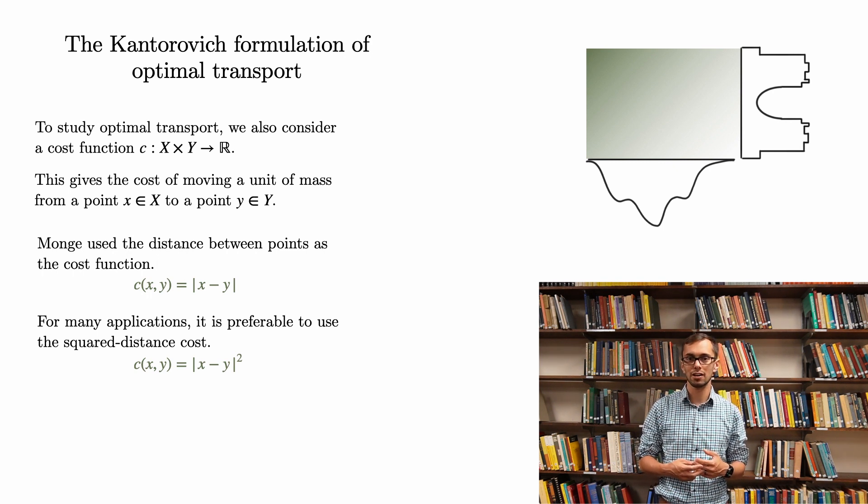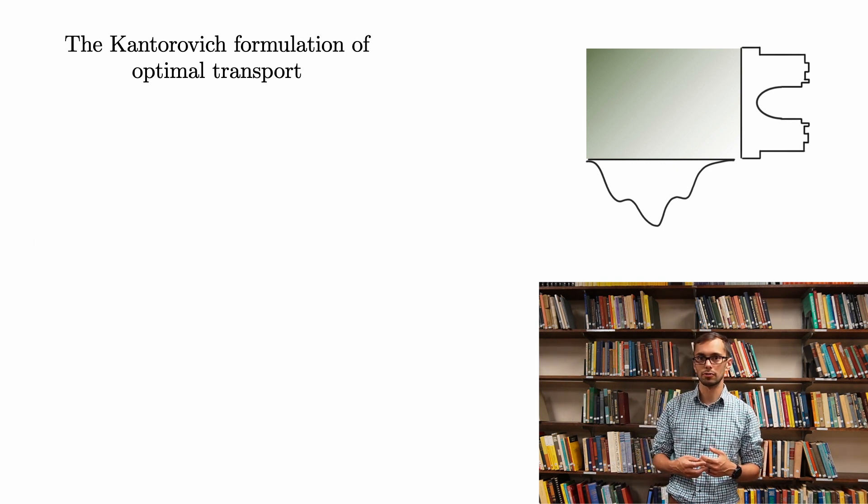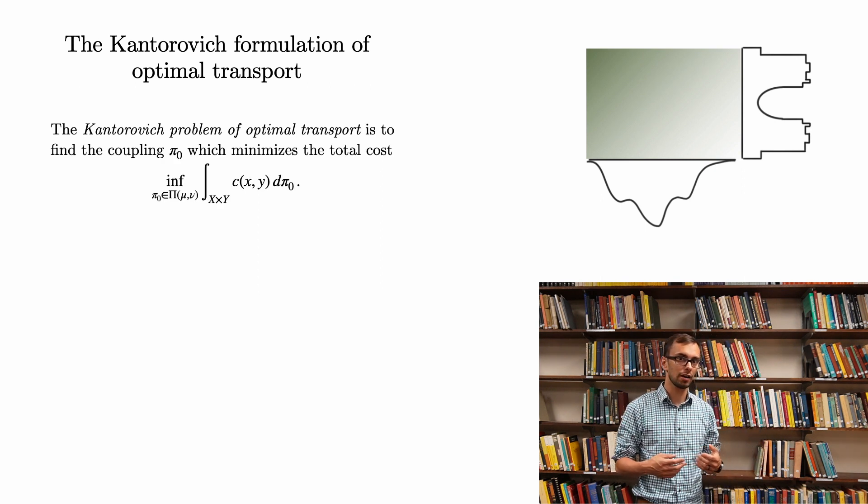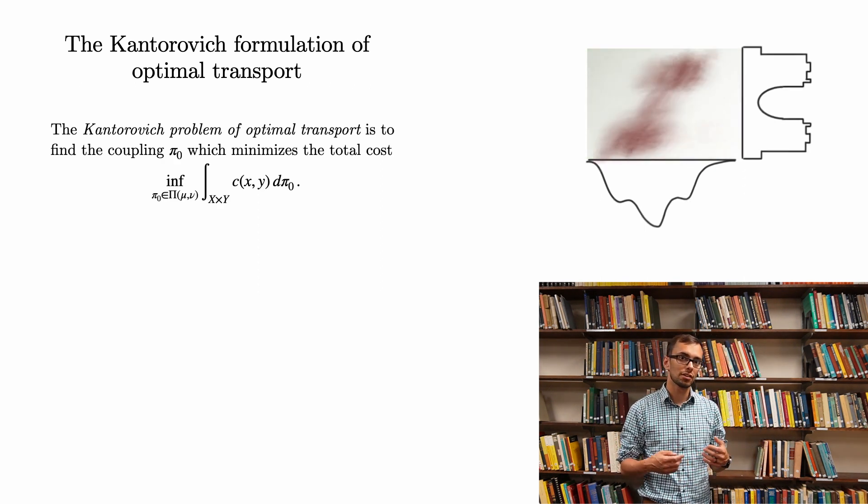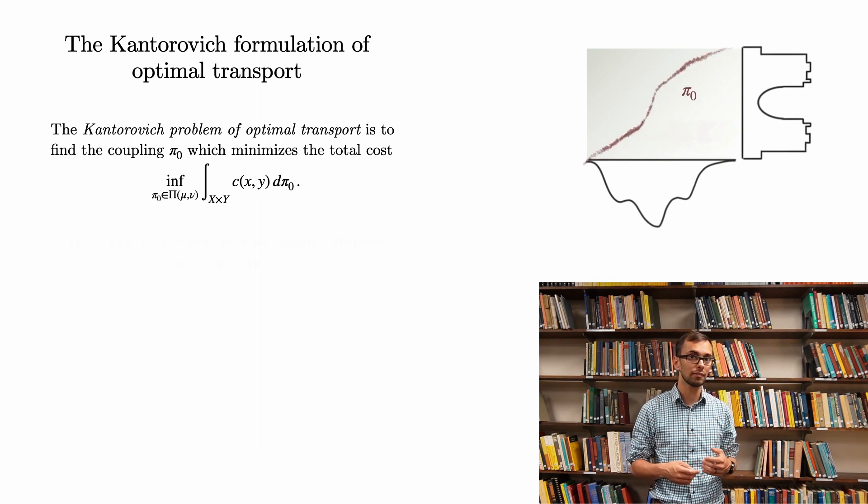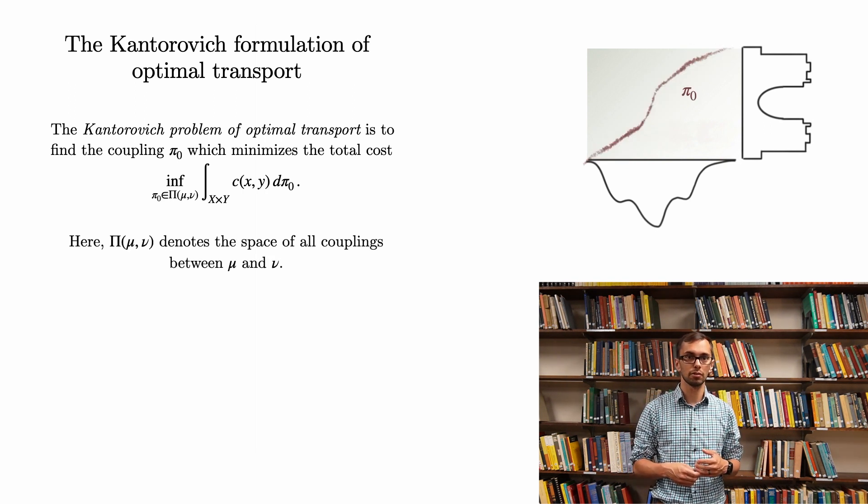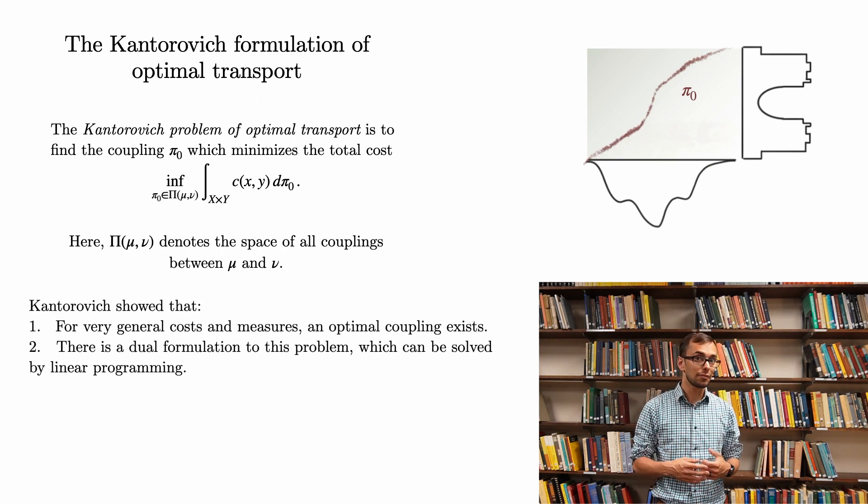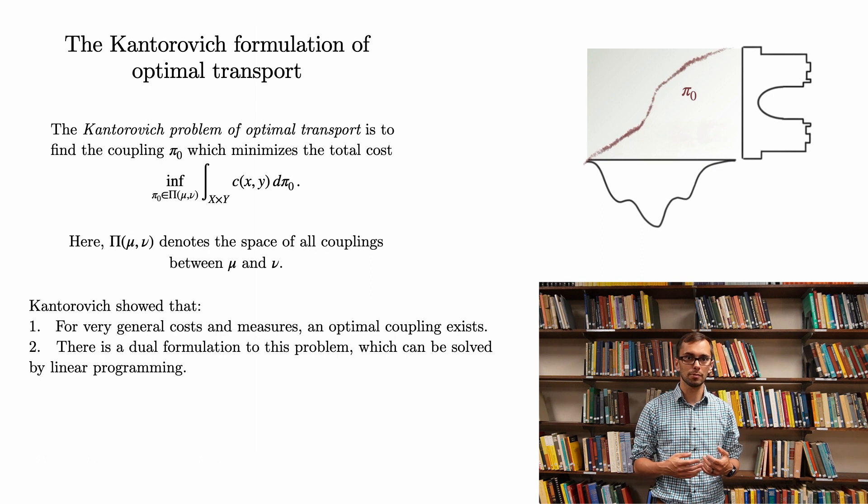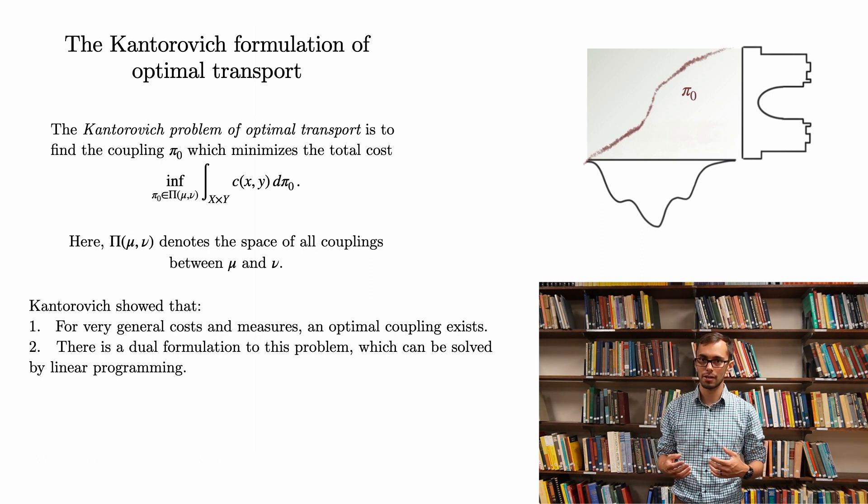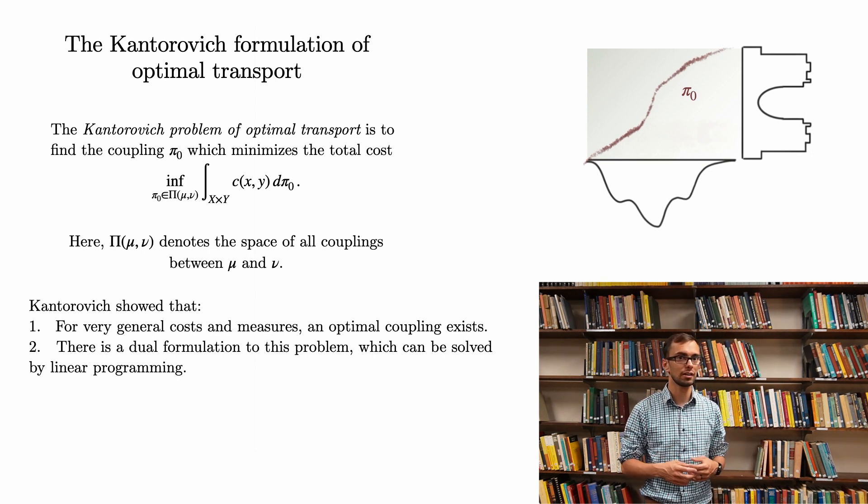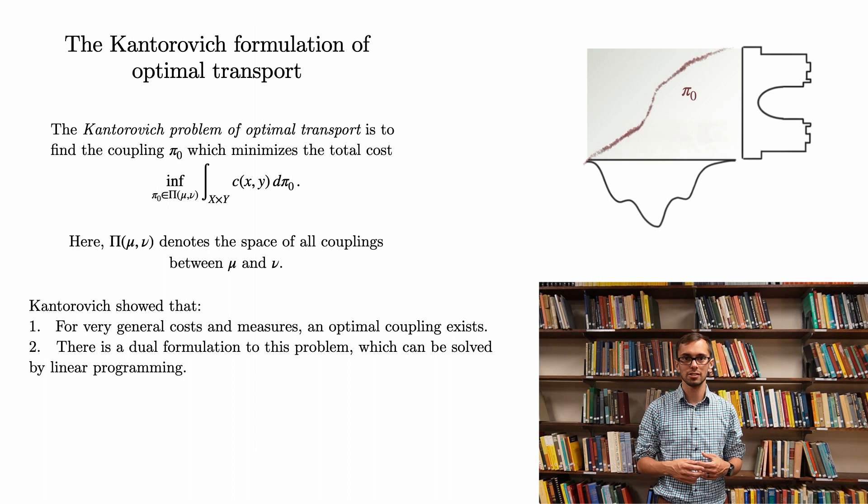With these preliminaries out of the way, we can now discuss the Kantorovich problem of optimal transport, which is to find a coupling, pi nought, which minimizes the total cost of the transport. Here, capital Pi of mu and nu denotes the space of all couplings between mu and nu. The advantage of considering this framework of optimal transport is that for very general costs and measures, an optimal coupling exists. Furthermore, Kantorovich showed that there's a dual formulation to this problem, and it is possible to solve the dual problem using linear programming.